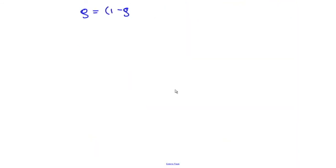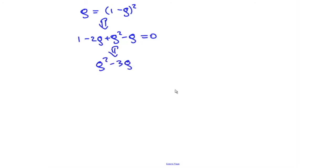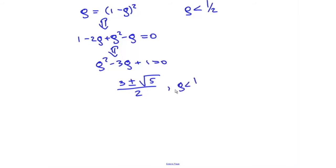So we have ρ = (1 − ρ)², which expands to ρ² − 3ρ + 1 = 0. The roots are given by (3 ± √5) / 2. Since ρ must be less than 1/2, we take the smaller root: ρ = (3 − √5) / 2, which is approximately 0.382. This quantity is very closely related to the golden ratio.